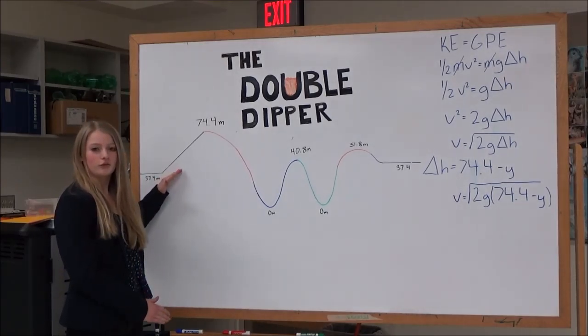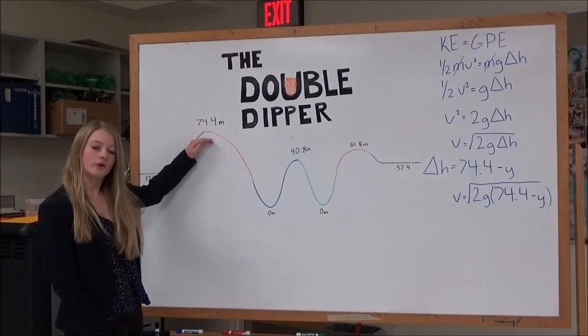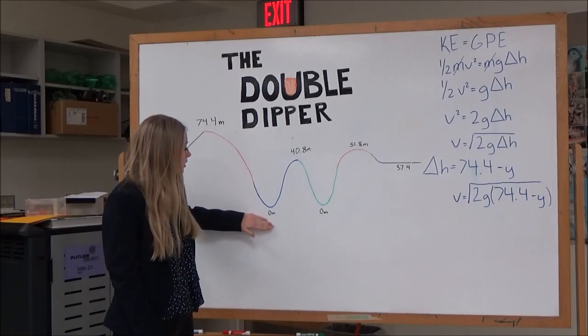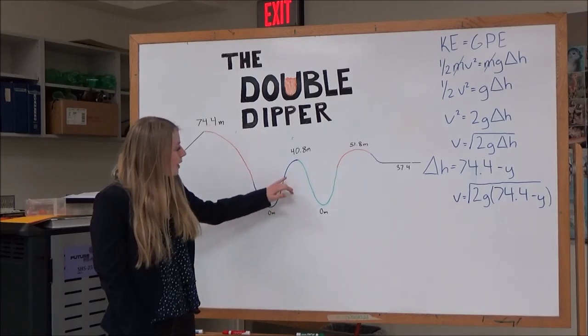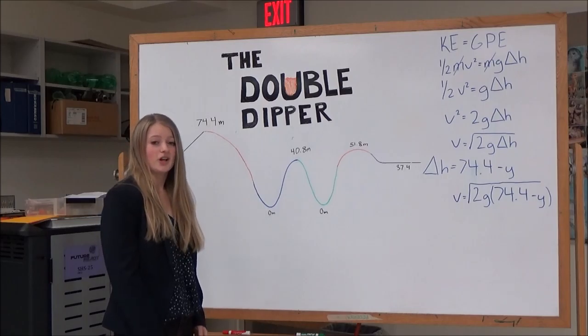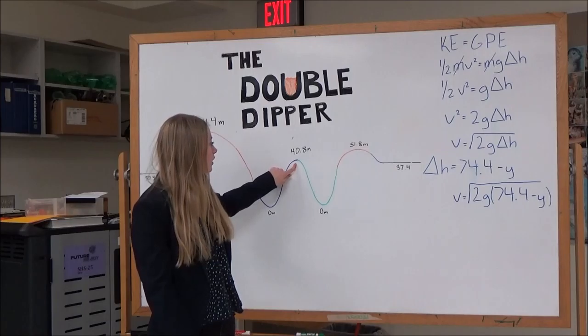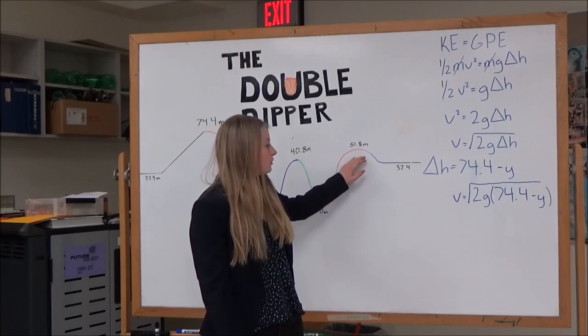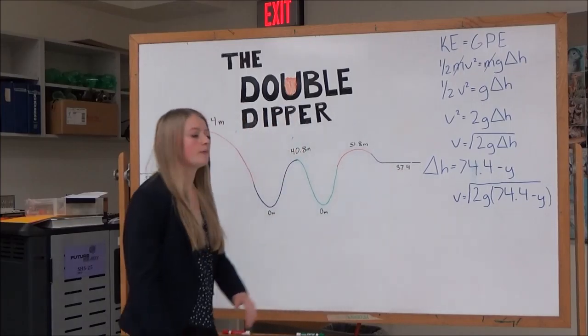The coaster starts off with a mildly steep incline to a maximum height of 74.4 meters. Then, it'll go down to our first point of 0 meters, which will be our absolute minimum. Then, it'll go back up, and at this point, you might think, oh man, the fun is over. But you get to experience it all again. Then, at this point, you'll be at 40.8 meters. Then, it'll go back down to zero, which will then bring you up to 51.8 meters, and that concludes our ride back down to 37.4 meters.